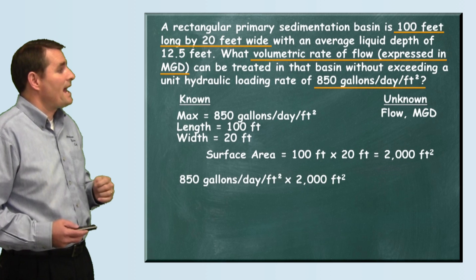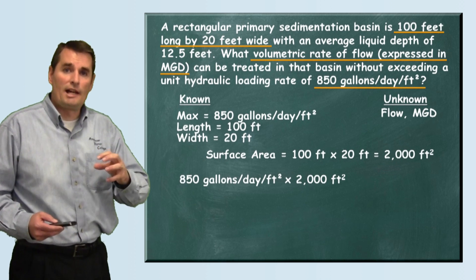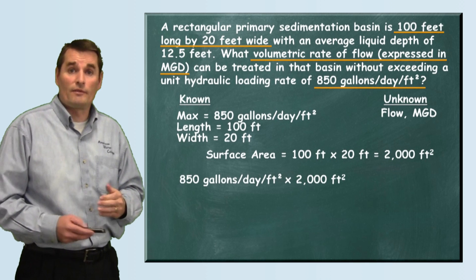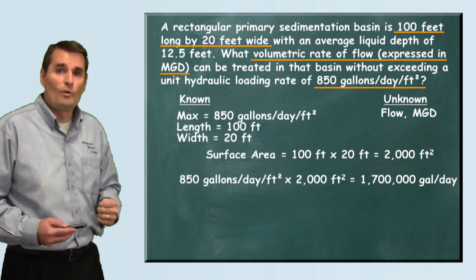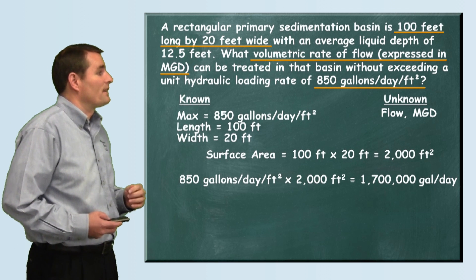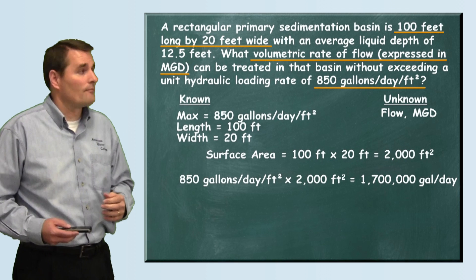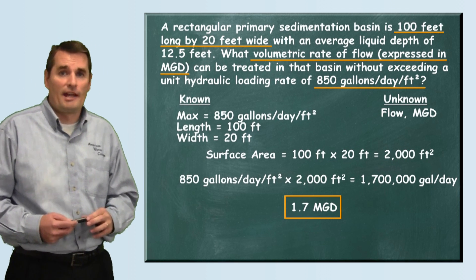We know that we can have 850 gallons per day per square foot. So by multiplying times the 2,000 square feet of surface area, we can find out what our maximum flow is. And when we do that, we get 1,700,000 gallons per day, which is simply 1.7 million gallons per day.